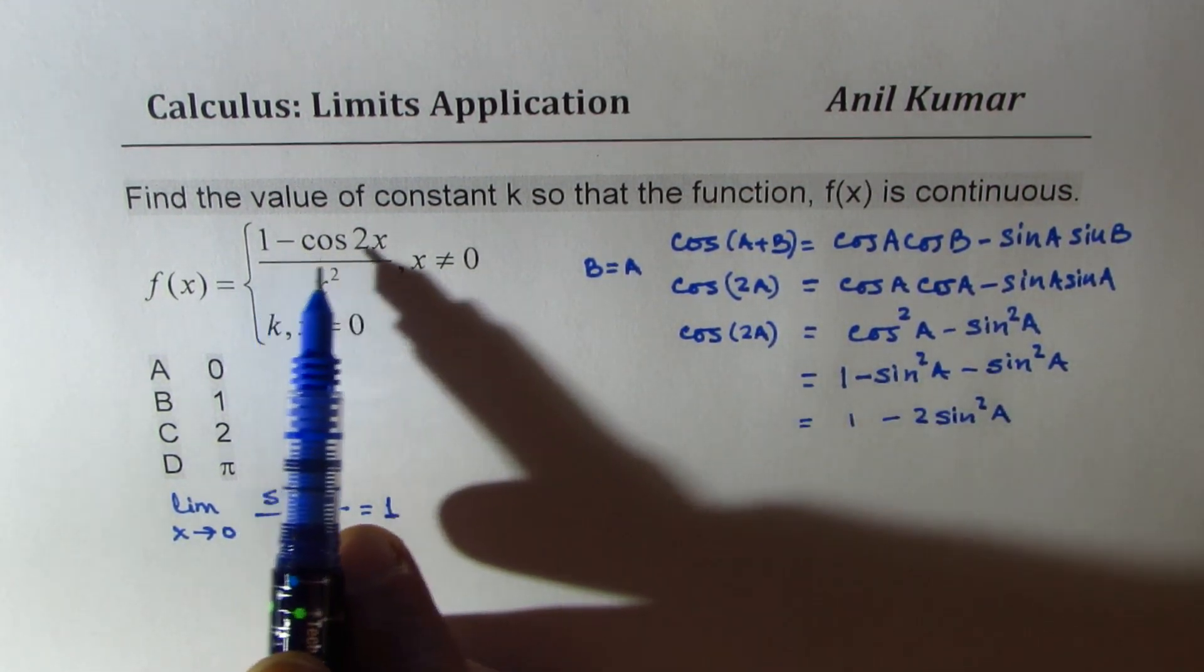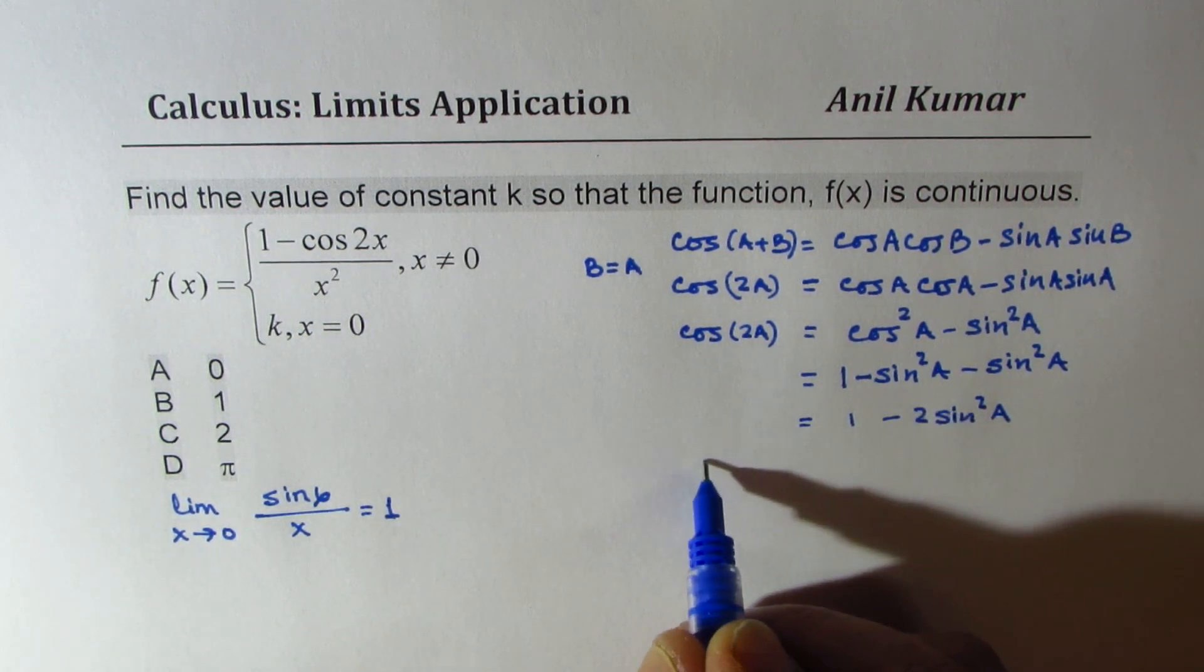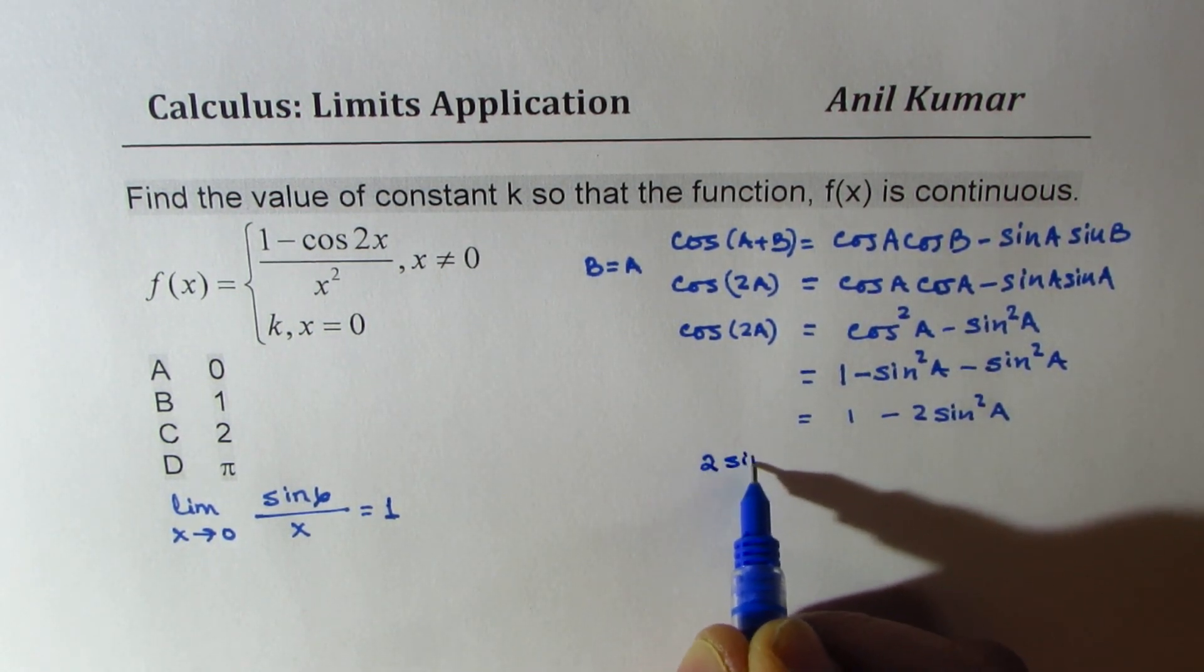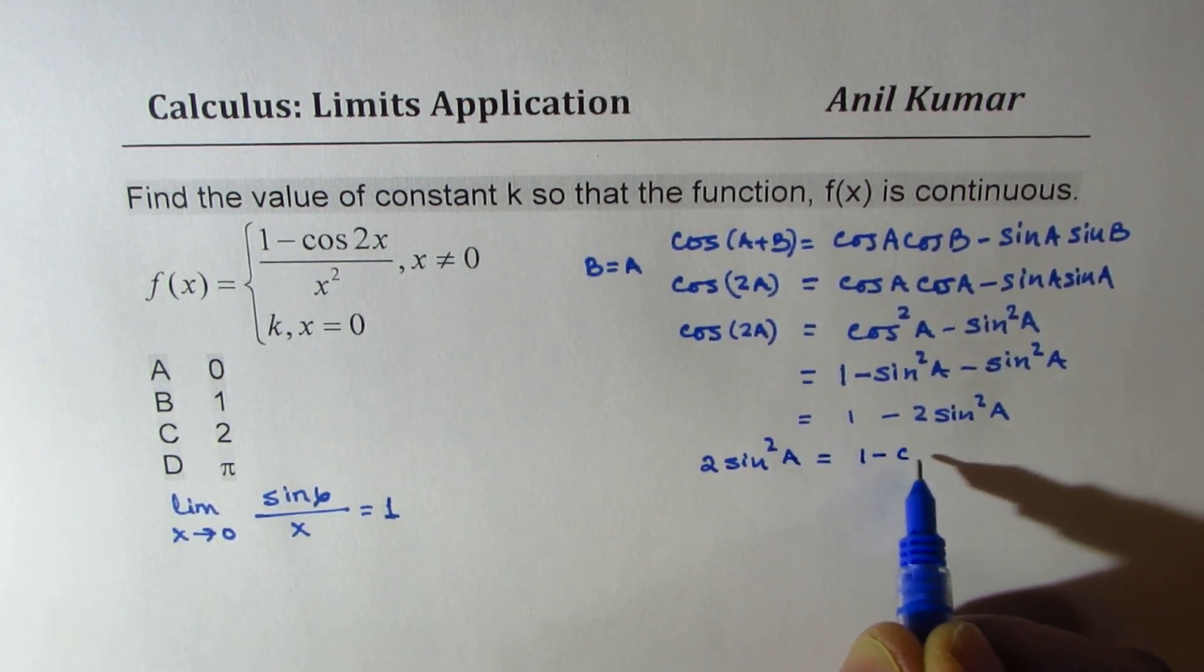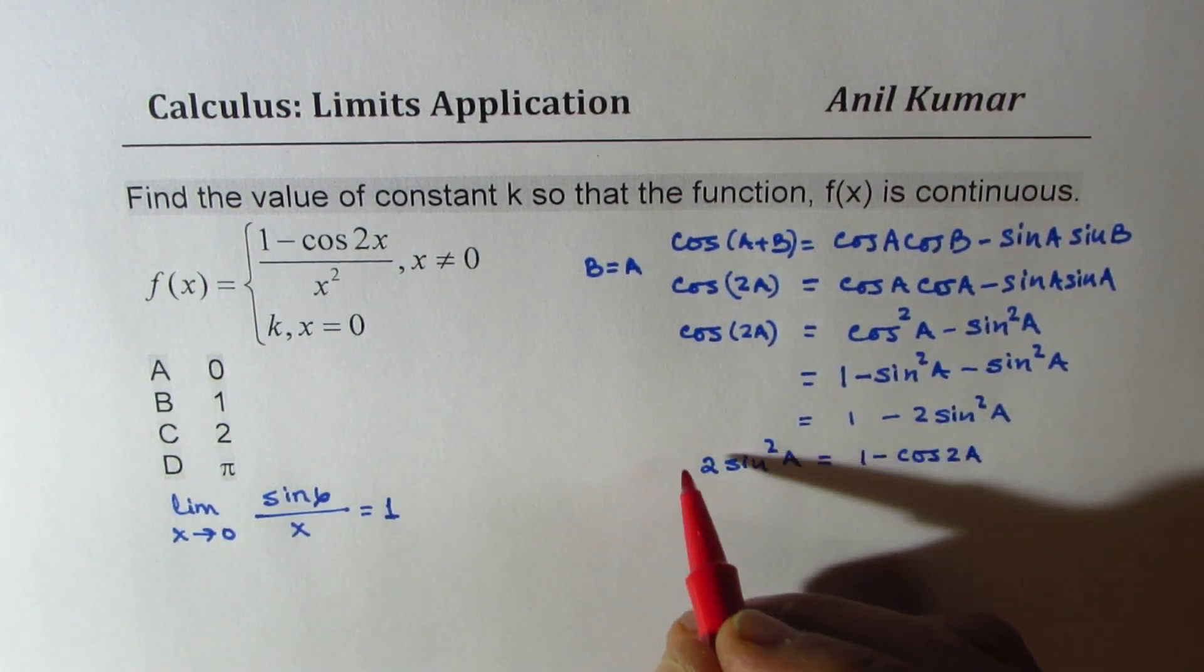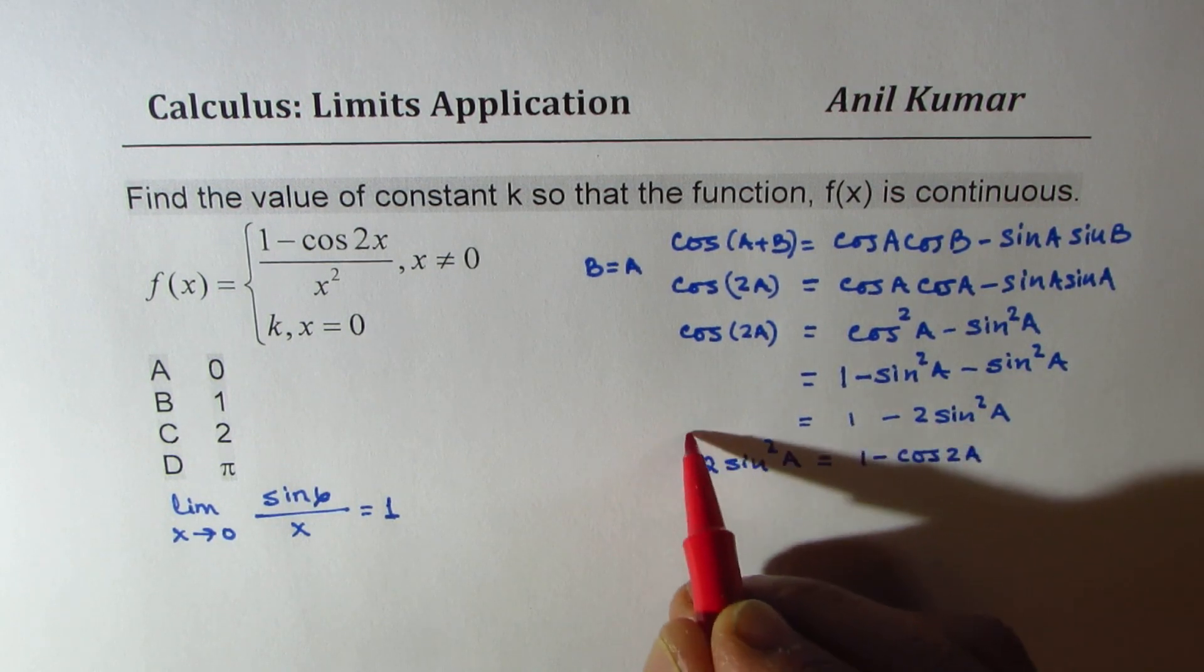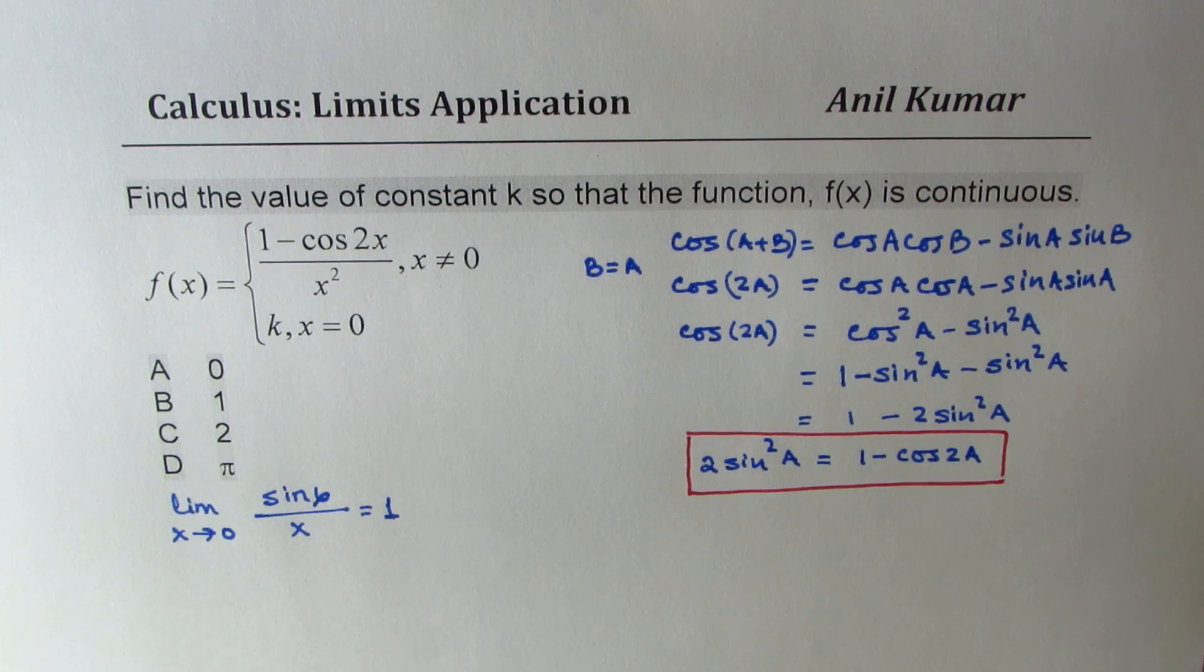Since we have 1 minus cos 2x, we can rearrange this. And rearranging gives us 2 sin squared a equals to 1 minus cos 2a. Perfect. So we kind of derived a relation between the numerator of this question to sin function, right? So we could use this to solve.